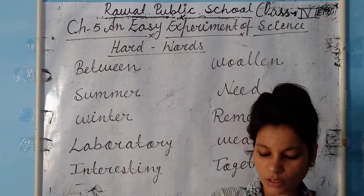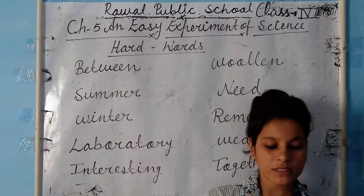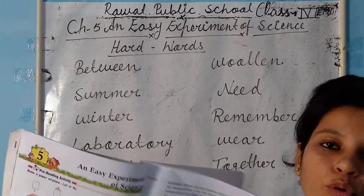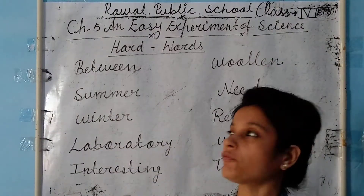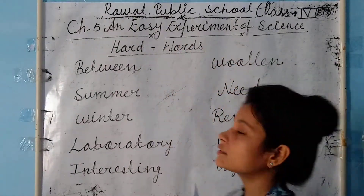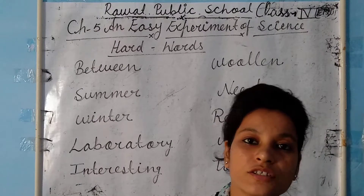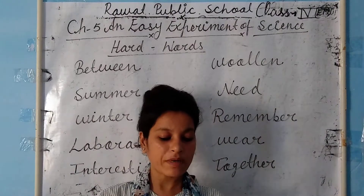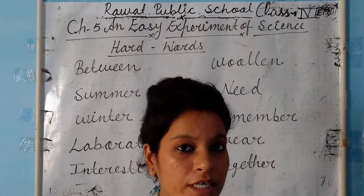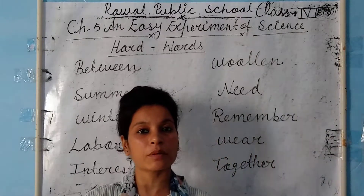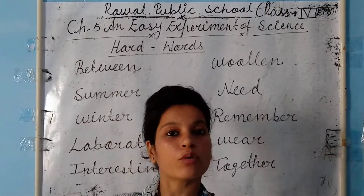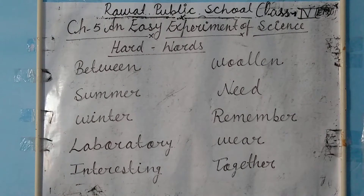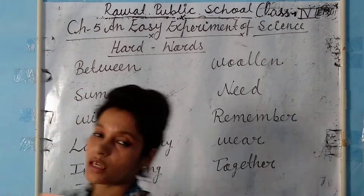Good morning class. You have completed chapter number four, so today we will start a new chapter — chapter number five. Open your book to page number thirty-two. First of all, we will look at the hard words.